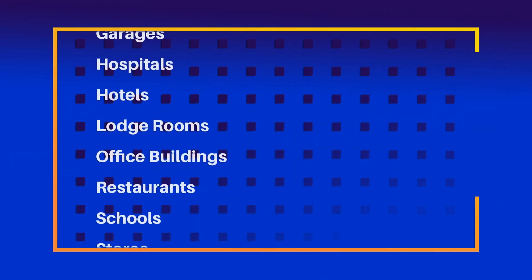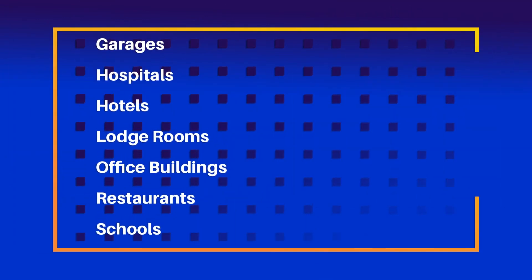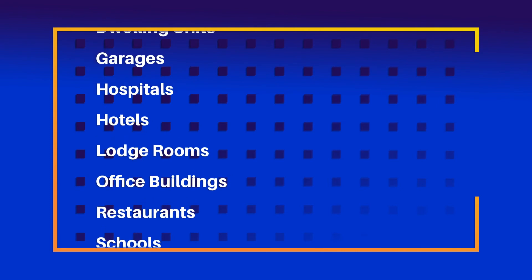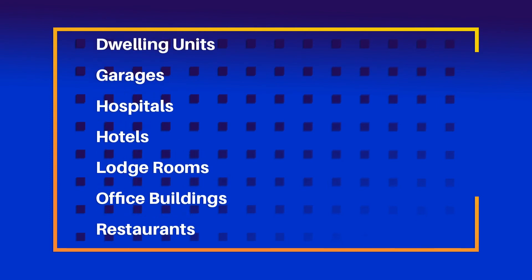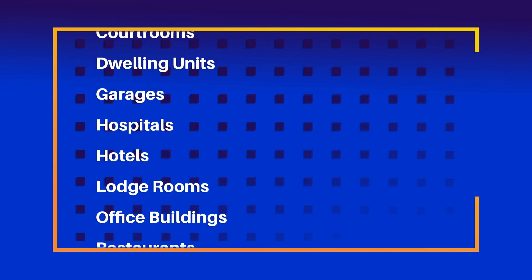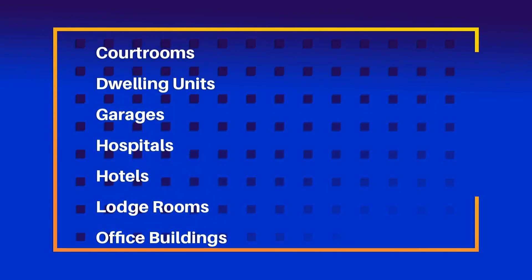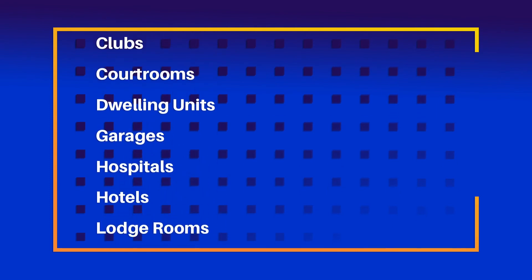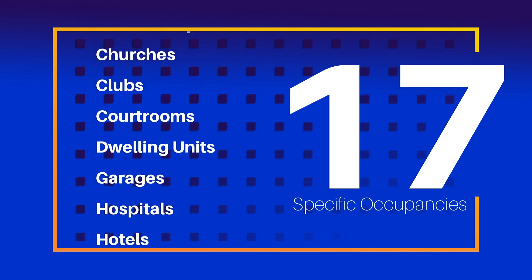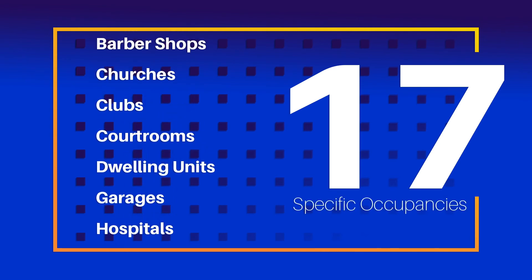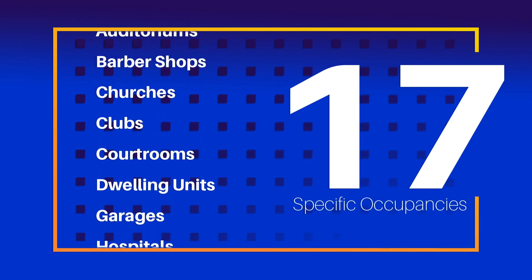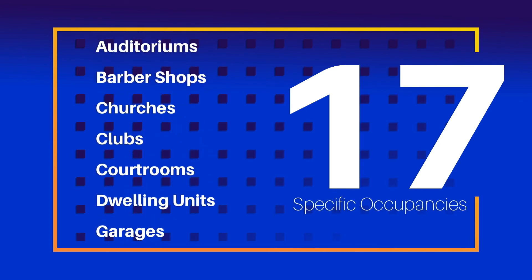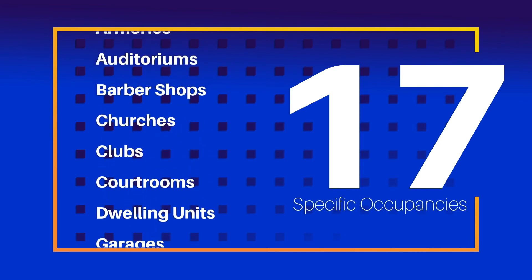Prior versions of Section 220.12 and its companion table provided lighting load values for calculations for 17 specific occupancies, including dwellings. But remember, this change is significant.